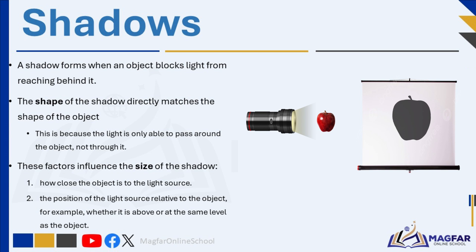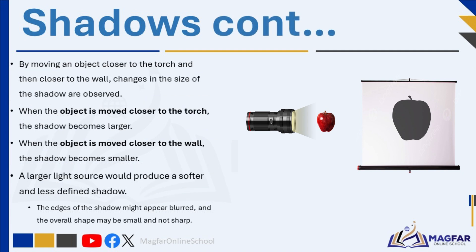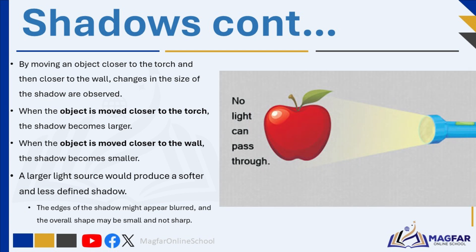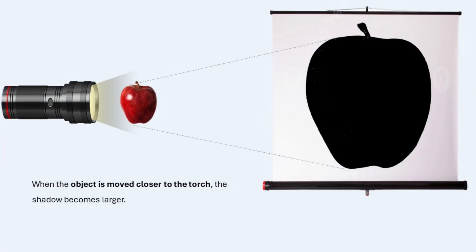A common experiment used to explore how shadows are formed uses a torch, an opaque object such as an apple, and a white wall or screen in a dark room. The torch is directed toward the white wall, which becomes bright as a result, because the light hits it directly. When the opaque object is then placed between the torch and the wall, a shadow forms on the wall because the object blocks the light. By moving the object closer to the torch and then closer to the wall, changes in the size of the shadow are observed.